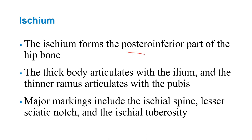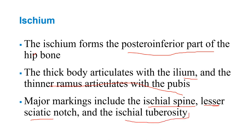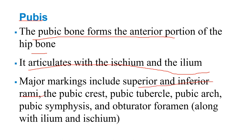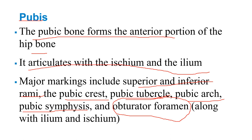Now talking about the ischium: it forms the posterior inferior part of the hip bone. The thick body articulates with the ilium, and the thinner part articulates with the pubis. Major markings include the ischial spine, the lesser sciatic notch, and the ischial tuberosity — that's the one you sit on. The pubic bone forms the anterior portion of the hip bone and articulates with the ischium and the ilium. Major markings include the superior and inferior rami, pubic crest, pubic tubercle, pubic arch, pubic symphysis, and the obturator foramen.